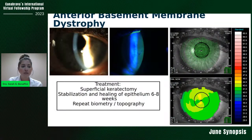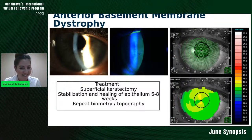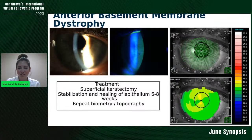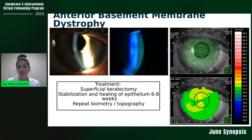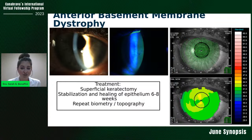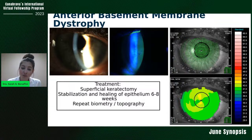Moving on — anterior basement membrane dystrophy. Dry eye is something I deal with all day, every day, so making sure you have good biometry is going to be essential for picking the right lens and for patient satisfaction. Just like dry eye, anterior basement membrane dystrophy has a lot of overlap in terms of symptoms — you get a loss of homeostasis of the tear film. So sometimes with these patients, especially if I see a lot of irregularity in the visual axis, I will do superficial keratectomy, allow stabilization and healing of the epithelium for six to eight weeks, then repeat the biometry and topography.